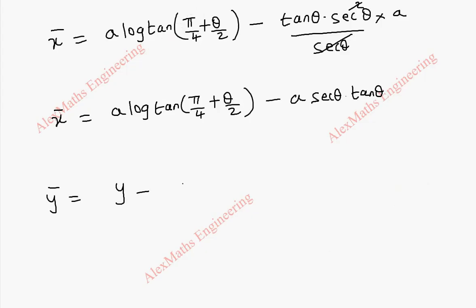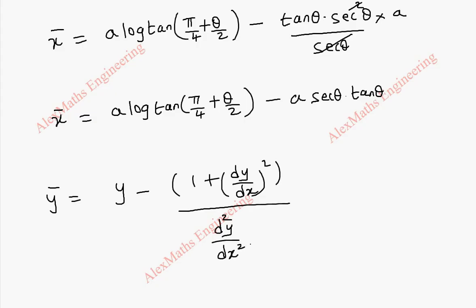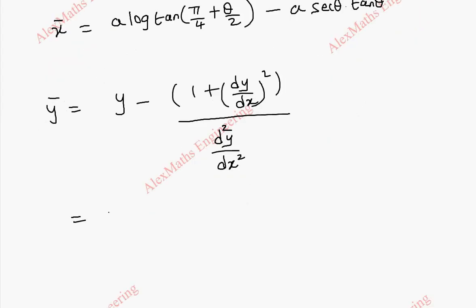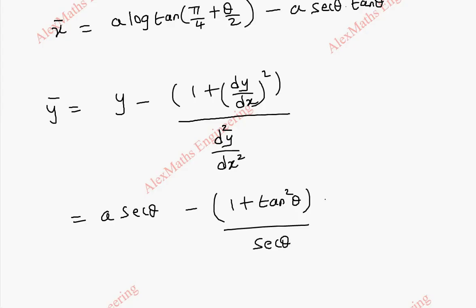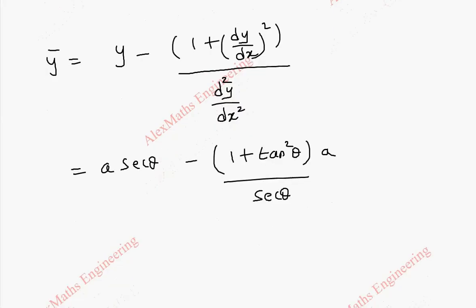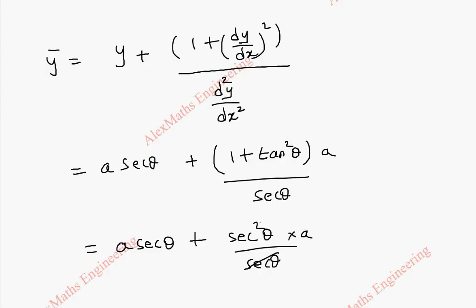Now for ȳ: the formula is y minus (1 + (dy/dx)²) divided by d²y/dx². This is a·secant θ minus (1 + tan²θ) by (secant θ / a). The numerator becomes secant²θ. Actually the formula is plus here, so a·secant θ plus secant²θ by (secant θ · a). After simplifying, this gives totally 2a·secant θ.